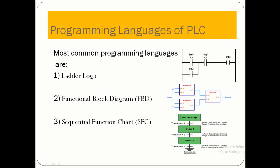The first one is known as ladder language. It is written with inputs like I0.0 and I0.1 on the input side, and M10.0 on the output side. The output side is represented with a coil and the input side is represented with contact buttons. This is the most important language, used widely all over the world — almost 99% of programming is constructed in ladder language.